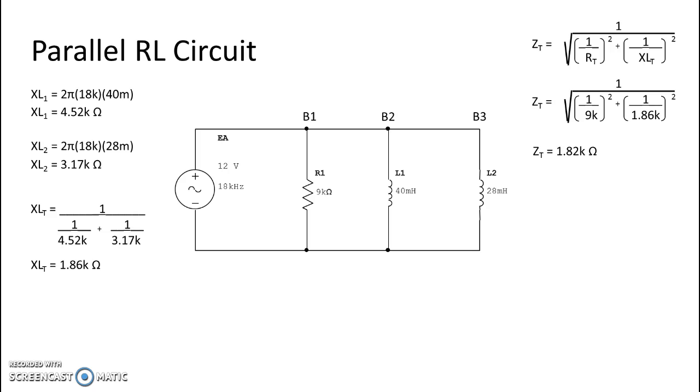Alright, next we do current. Current is super easy. We just take voltage divided by the impedance. And that gives us our current of 6.59 milliamps.